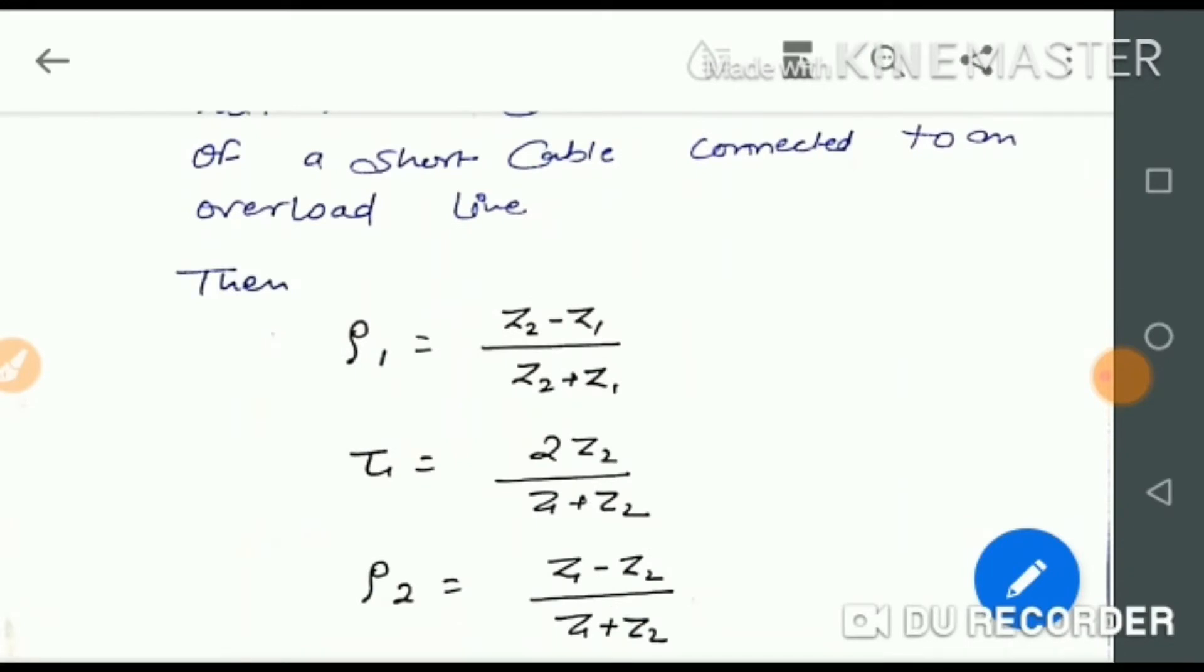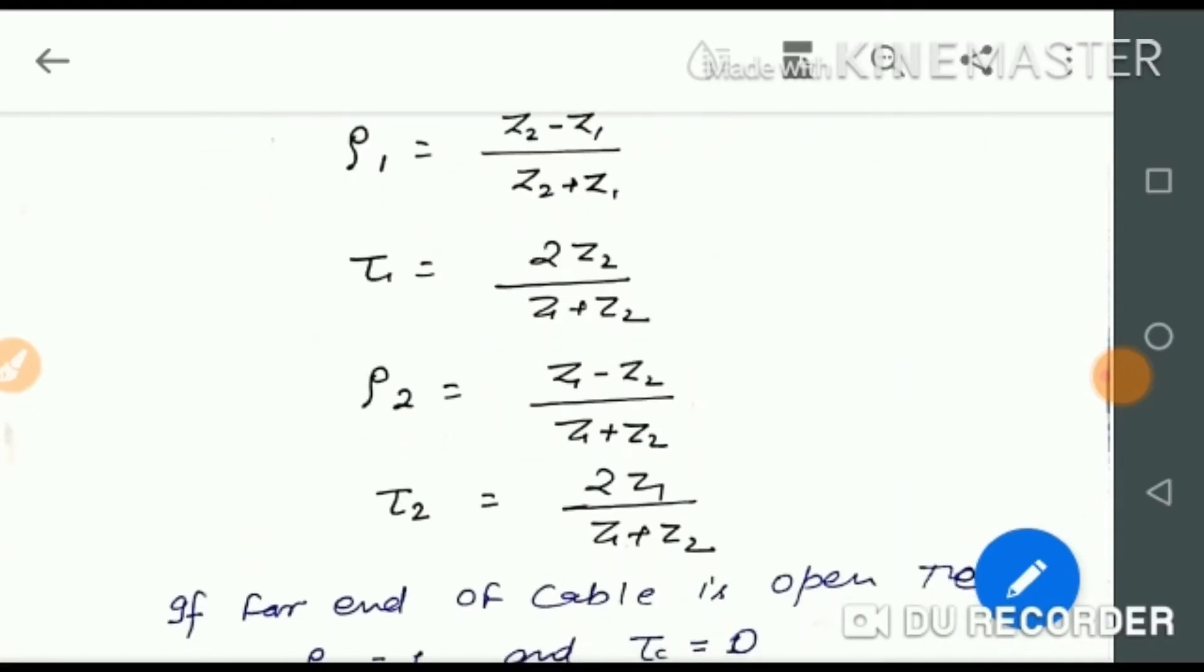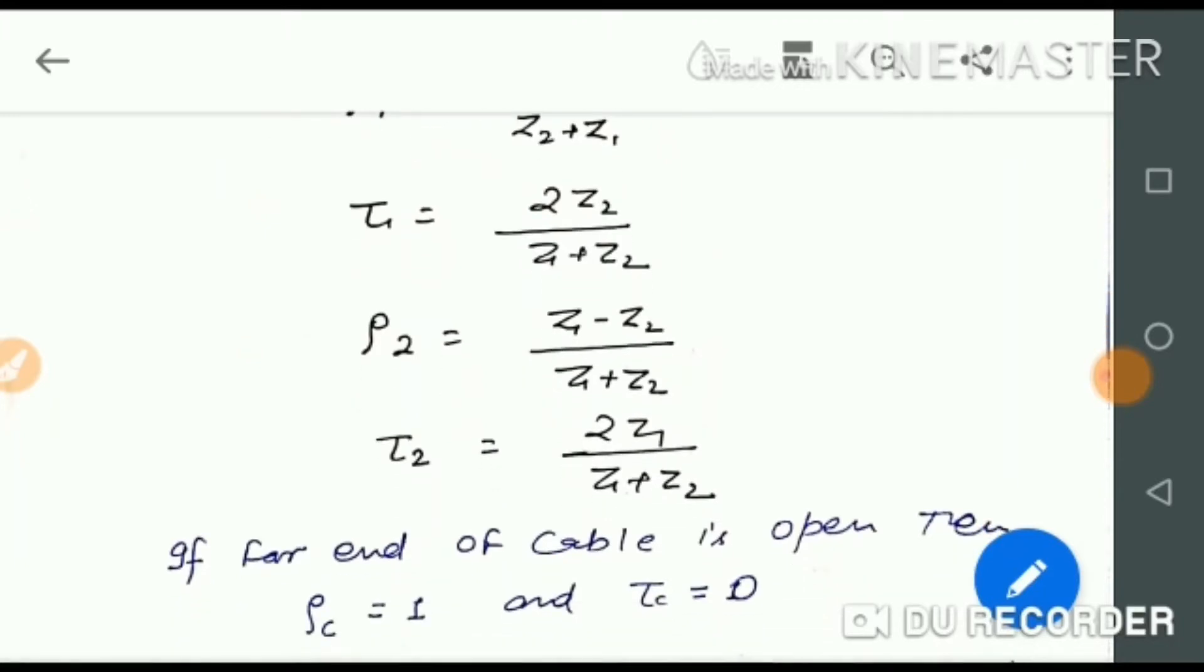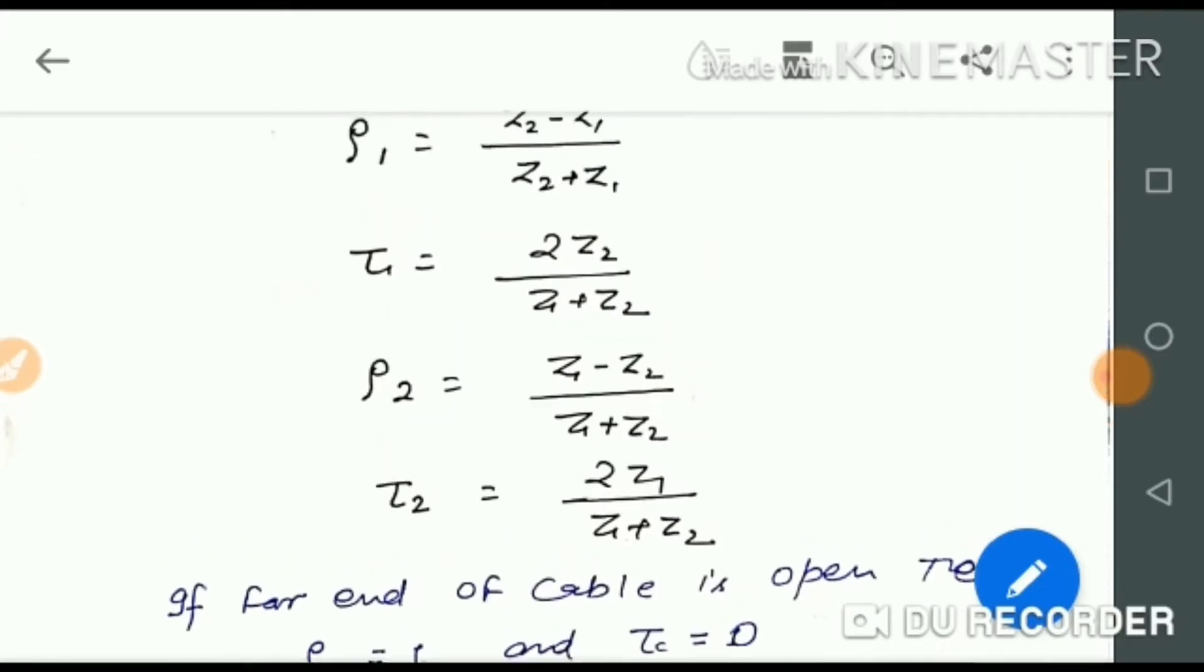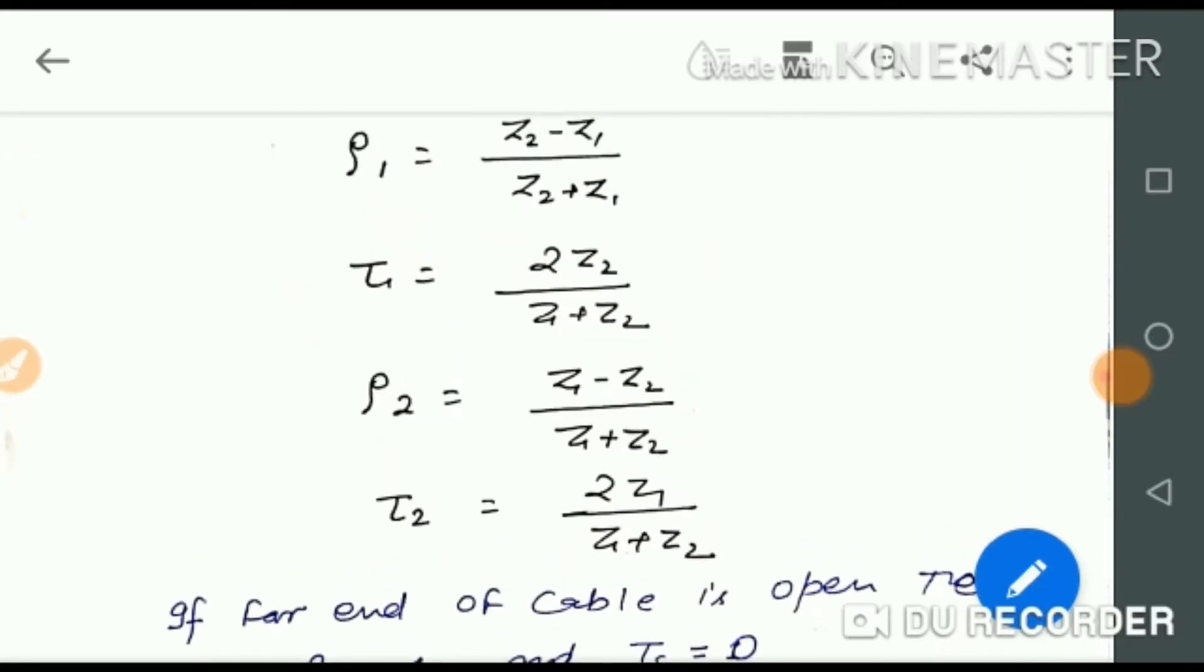If we are talking about the formulas of ρ1, τ1, ρ2, τ2, ρ1 is the line to cable reflection factor, and ρ2 is the cable to line reflection factor. Two things are there: line to cable and cable to line.